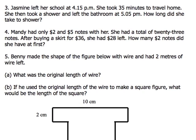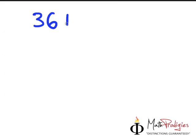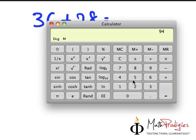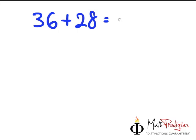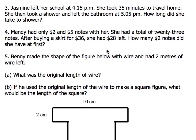So we take $36 plus $28 — that's the first step — because you want to know how much money she had at first. So 36 plus 28 gives you $64. So at the start, she has $64. And this is where we have to find out how many $2 notes and $5 notes she had at first.